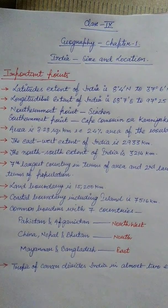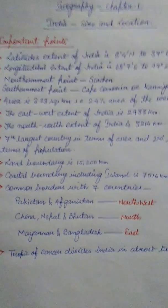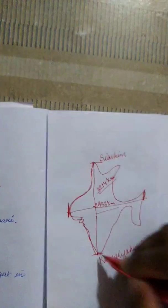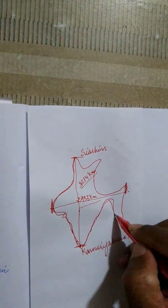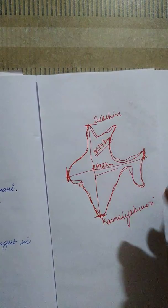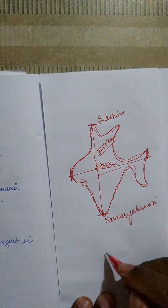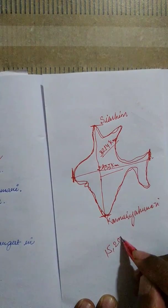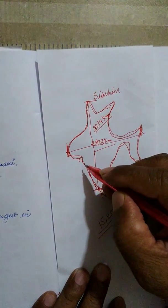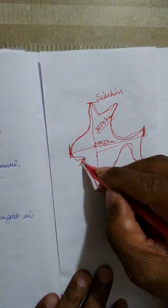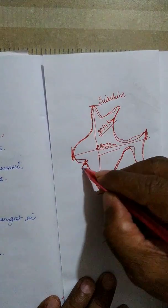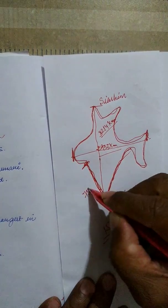The next point is the boundary — the land boundary that India covers. Starting from Siachin, the whole circumference of the country is the land boundary, and it is 15,200 km. Out of 15,200 km, 7,516 km is the coastal land boundary — coastal means the area which is surrounded by the sea.